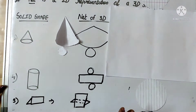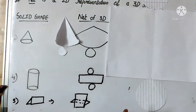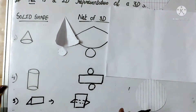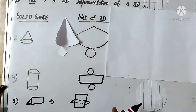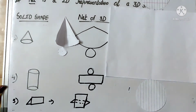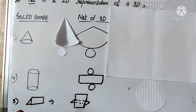We have completed this topic on nets. Now for exercise 11E, question number 1, do this in your classwork copy. You have to join each shape to its matching net — that means match the cylinder, cuboid, pyramid, and cone to their correct nets.